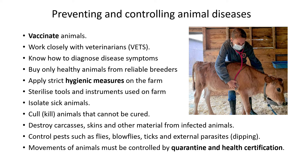Apply strict hygienic measures — in milking parlors, make sure all machinery is clean so diseases don't spread. Sterilize tools and instruments. Isolate sick animals so the disease doesn't spread. Cull animals that cannot be cured. Destroy carcasses, skins, and other materials of affected animals by burning them, since burying in soil doesn't necessarily kill bacteria. Control pests such as flies and blowflies that spread disease.